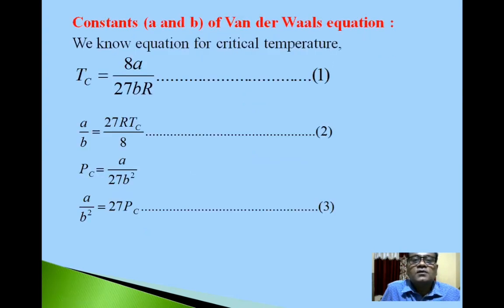We know equation for critical temperature: Tc is 8a upon 27bR. We can look from this equation first, we will get value of a upon b. Here a upon b value is equal to 27RTc upon 8. Equation second.